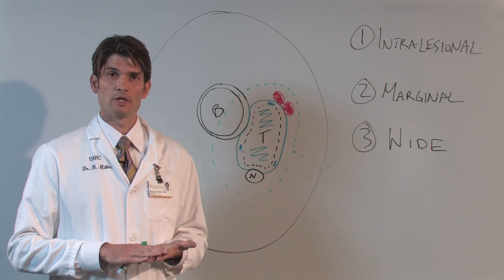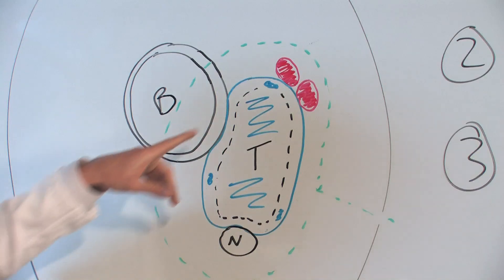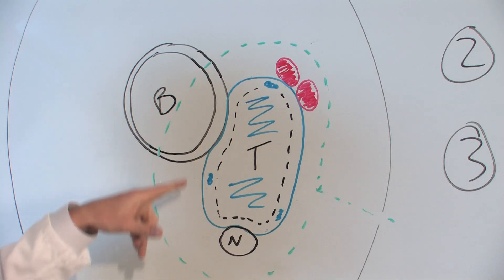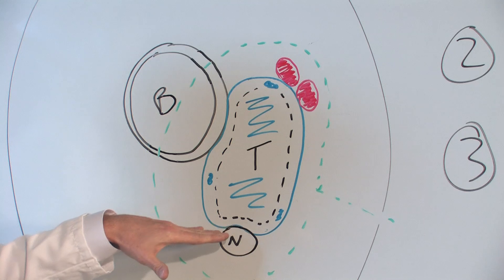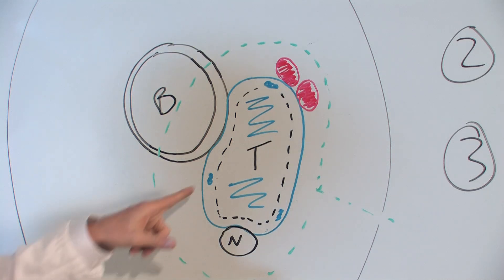The way to avoid it is by employing what's called marginal margins. Now what a marginal margin is, is we take the tumor out in its entirety, but we peel it off of these nerves, off of the bone, off of the blood vessels. The consequence of this is that theoretically there are small pieces of the tumor in what's called the reactive zone, at the edge of the tumor itself. Now if we did a marginal margin by itself, the chance of the tumor growing back in this area would be unacceptably high.